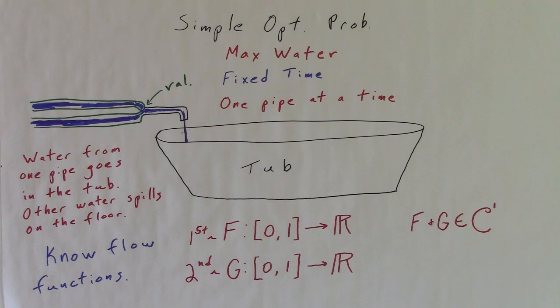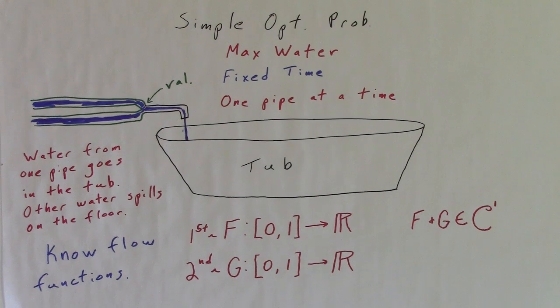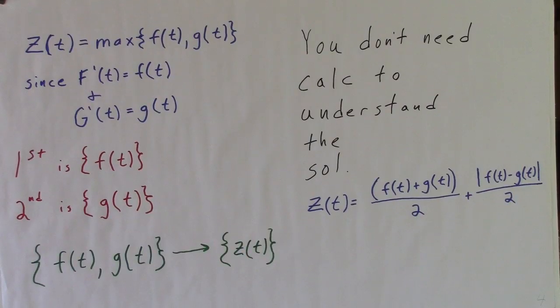Each pipe has a known flow function, f and g, which are both continuously differentiable. The optimizer compares the derivatives at each point in time, and chooses the maximum. This rule produces a new function, z, which I call a zenith function.